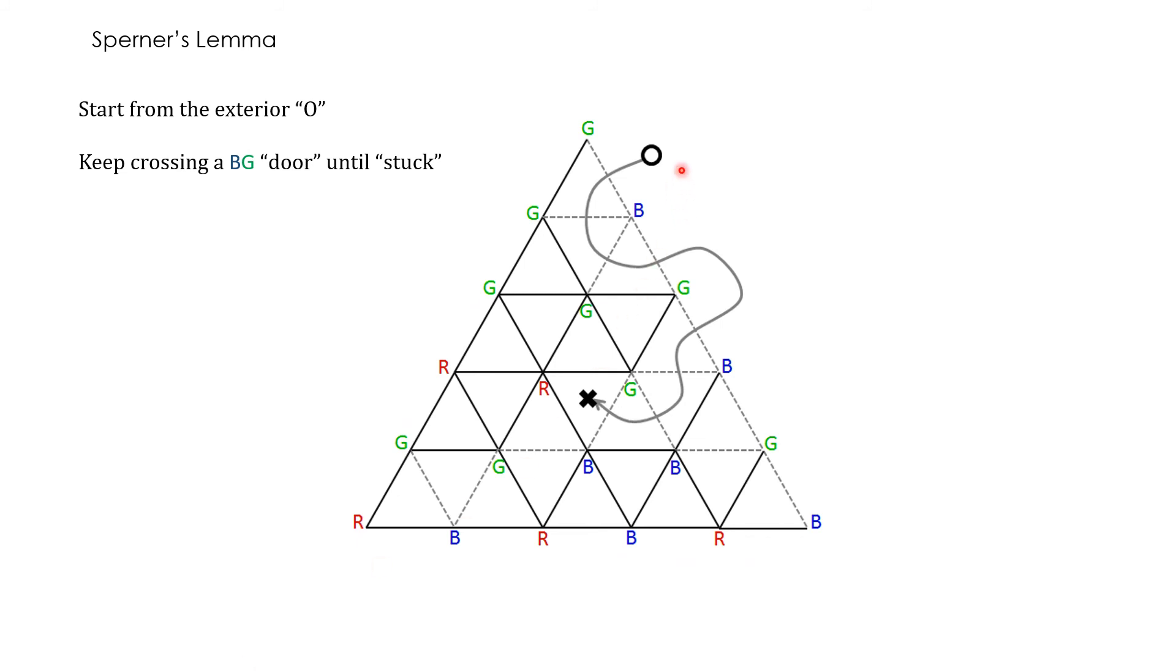So we will start from the outside, this point here. And then we will keep crossing these BG doors one after the other. And remember that we can cross each GB door only once. And we keep doing so until at some point we are stuck. There is no GB door left for us to cross.